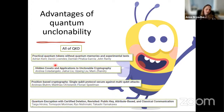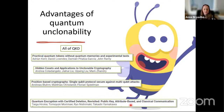We're going to talk about all of these except position-based cryptography today, though that too is a very interesting topic. These talks — practical quantum tokens, hidden cosets and applications to unclonable cryptography, and quantum encryption with certified deletion revisited — are all in green, meaning you can watch them tomorrow.